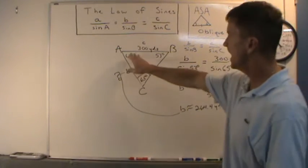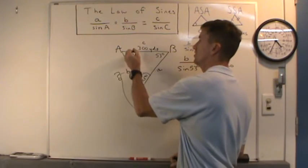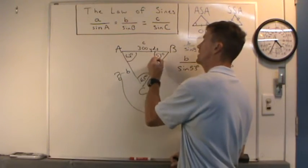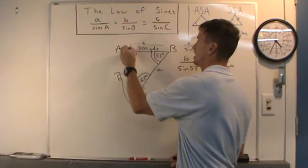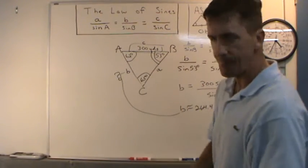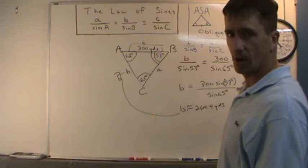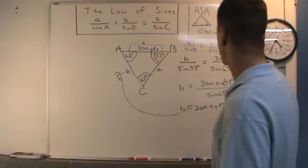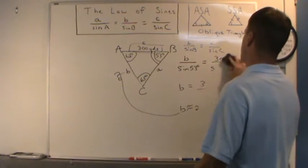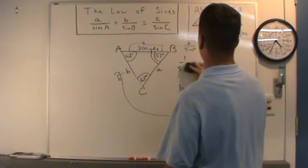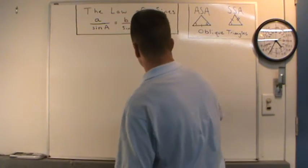So that's ASA — we were given two angles and an included side. Now let's look at SSA, which is referred to as the ambiguous case.